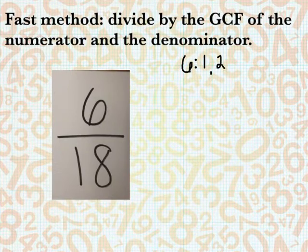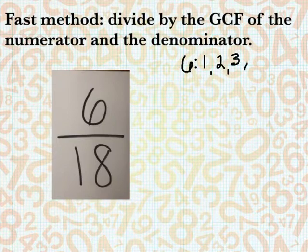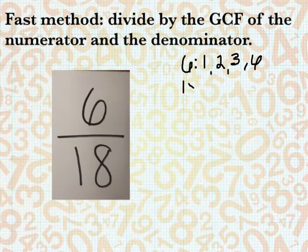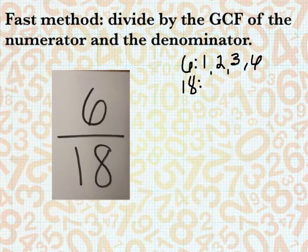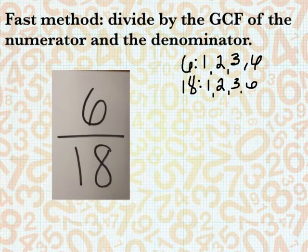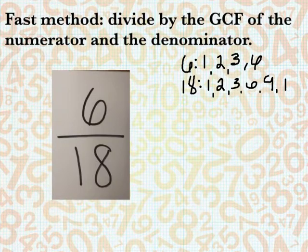I know that 6 is 1, 2, 3, and 6. And 18 would be 1, 2, 3, 6, 9, and 18.